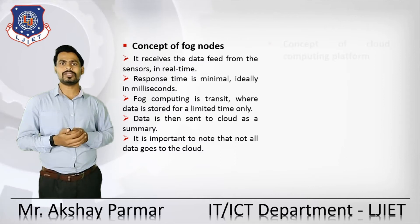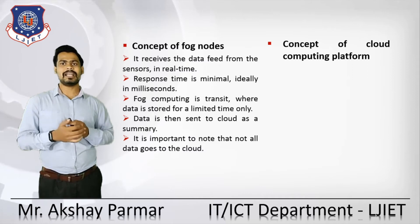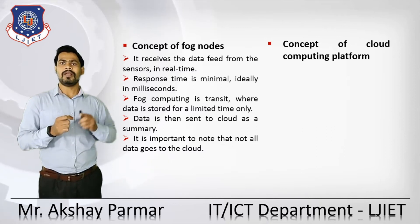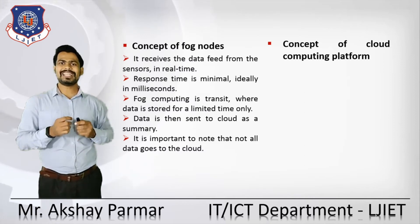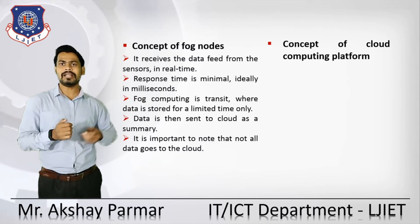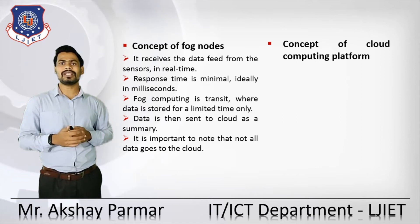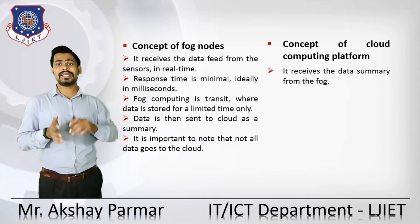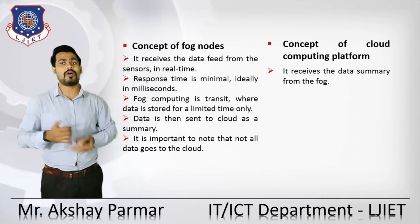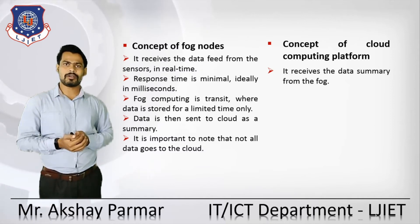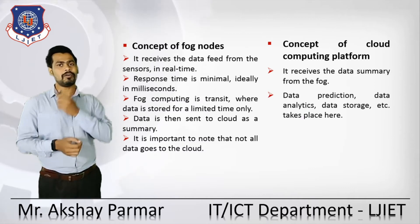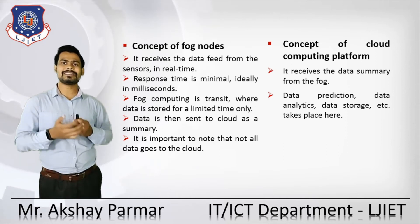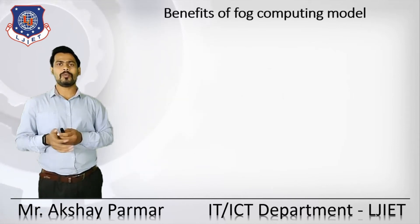The fog nodes receive the data feed from sensors in real time. The response time is minimal, ideally a few seconds. Fog computing is a transit layer where data is stored for a limited time only. The data is then sent to the cloud as a summary — not all data goes to the cloud, only the processed and important data is transferred from fog nodes to the cloud. At the cloud computing platform, it receives that data summary from the fog. Data prediction, analysis, and storage all take place on the cloud computing platform.